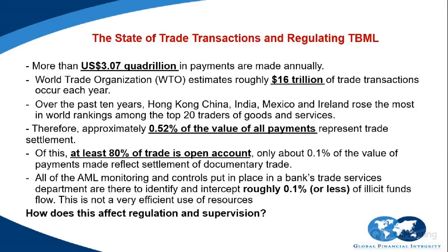This shows us that 0.52% of total payments are represented through trade. Breaking these numbers down further, common wisdom through organizations such as the Wolfsburg Group says that 80% of all trade is open account trade, meaning those trade transactions do not depend on documents such as letters of credit issued by banks. They are simply direct payments between related entities. This means that only 20% — which is 0.1% of the value of global payments — is accounted for in trade transactions that banks can supervise when dealing with trade-based money laundering.